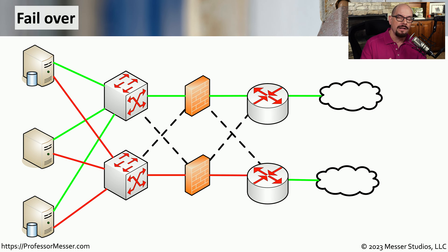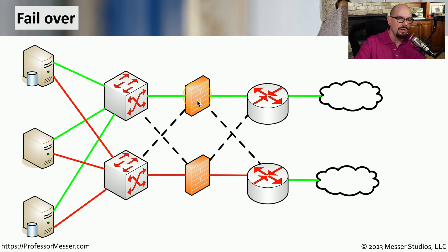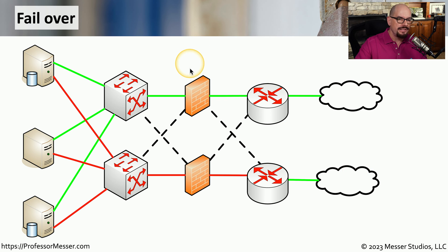Here's a diagram that describes how failover could be designed in an infrastructure. We might have multiple internet connections from different providers, connected to different routers inside our organization, which connects to redundant firewalls. We would also have multiple switches, and on the back end, multiple links from individual servers. If there is a break in the primary connection because a switch, firewall, or router fails, we've always got a secondary link to gain access to the internet. We could even extend this by adding load balancers with multiple servers for each of these individual connections.